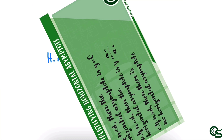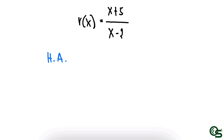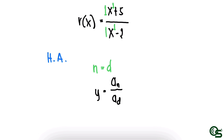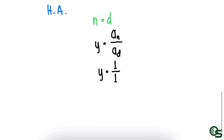Going back to the example, let us compare the highest exponent of the numerator and the denominator. The numerator is x raised to 1 and the denominator is also x raised to 1. Therefore, we fall under the second case where the numerator degree equals the denominator degree. We solve the ratio of the leading coefficients: the leading coefficient is 1 for both. Therefore, y is equal to 1 over 1, and simplified, y is equal to 1.